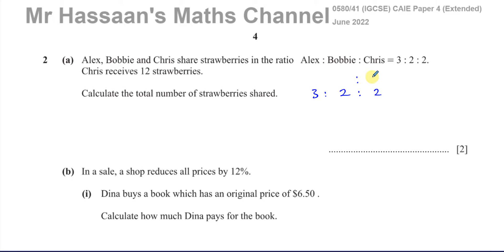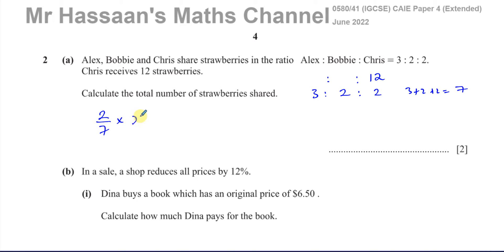We know that Chris has 12 strawberries. One way of finding the total is to think about the fraction of the total that Chris receives. The parts are 3 to 2 to 2, so 3 + 2 + 2 = 7 parts. Chris receives 2 parts out of 7 of the total. Calling the total x, we have (2/7)x = 12. Multiplying both sides by 7 and dividing by 2 gives x = 7 × 6 = 42. So there are 42 strawberries altogether.